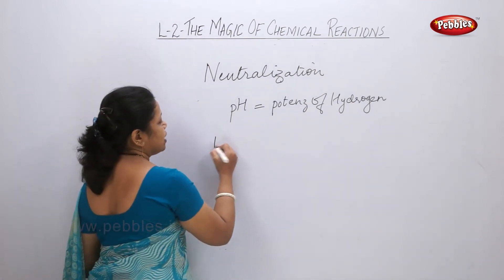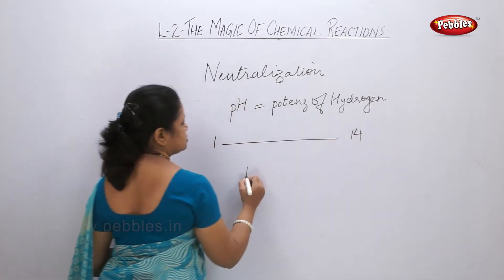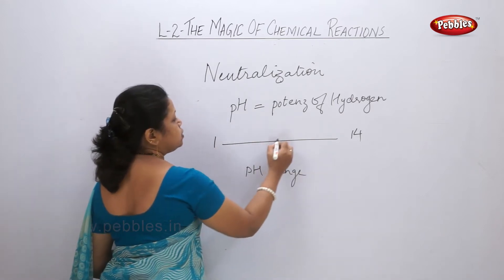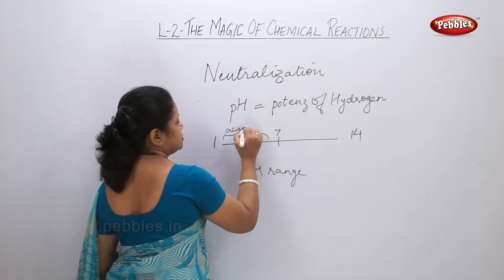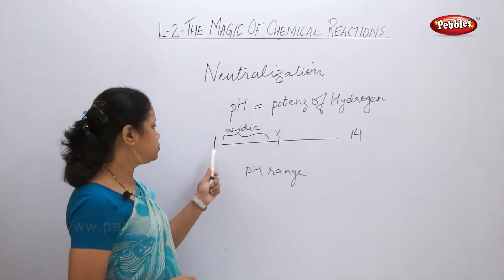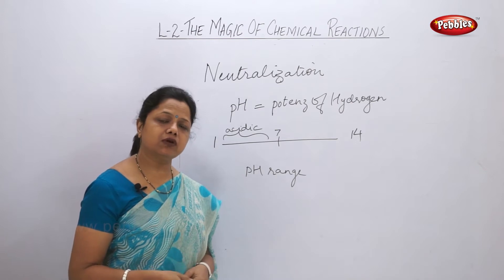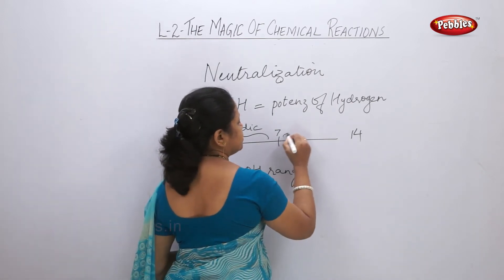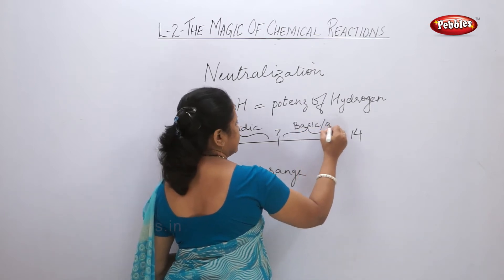The pH value starts from 1 to 14 — this is the pH range. From 1 to 7 is called the acidic range. If the pH of a particular substance falls between 1 to 7, the nature of that substance is called acidic. And from 7 to 14, if the substance falls in that range, it is called a basic or alkaline substance.